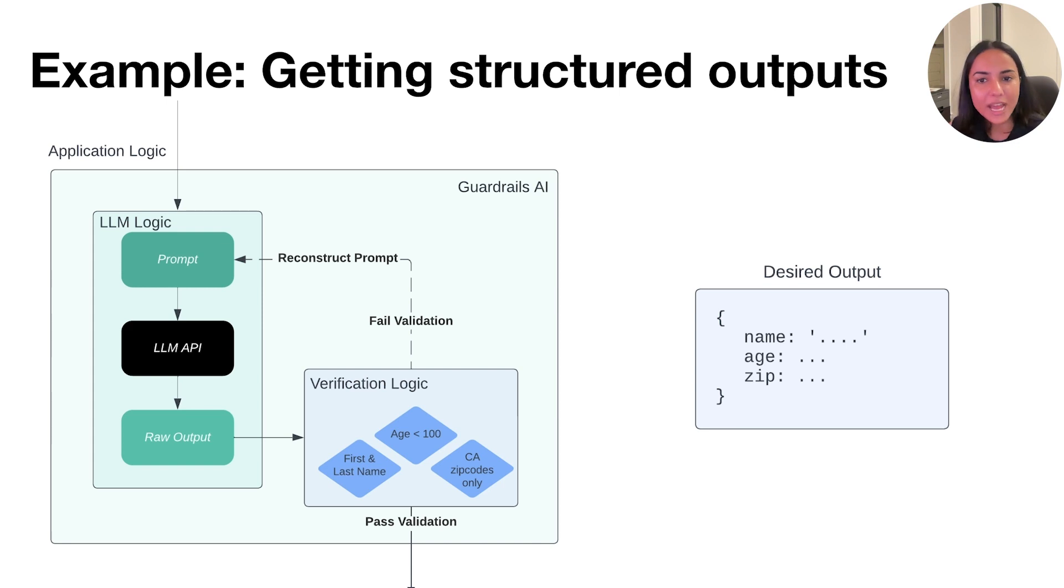Additionally for the application that we're building, let's say that our verification logic contains things like that the first and last name should be contained within the name, that the age should be less than 100, and in the zip code, let's say that we want California zip codes only. So what does this look like? What does ensuring this criteria with guardrails look like?